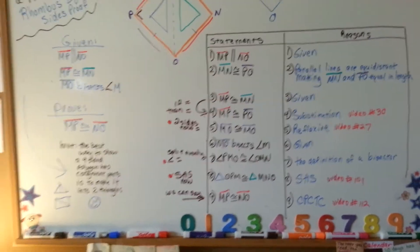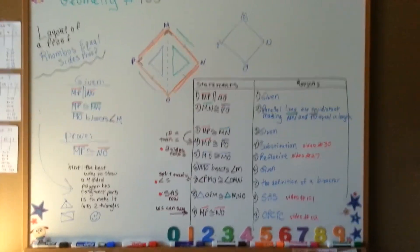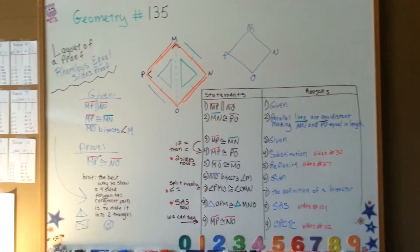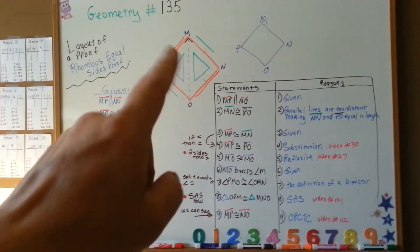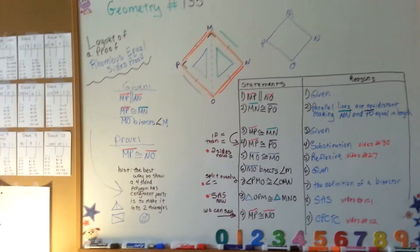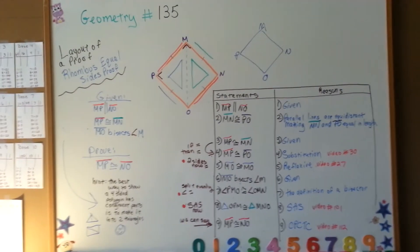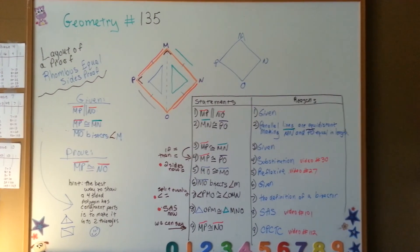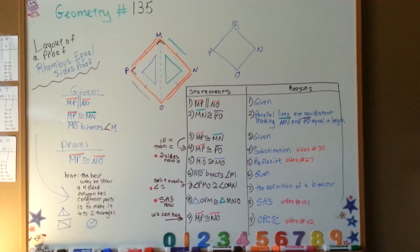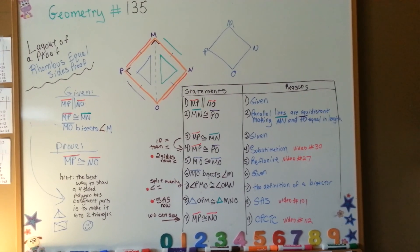That is the rhombus equal sides proof. Remember that we started with a blank rhombus and that it gave us a clue to bisect it and that's what helped us solve it because now we had two congruent triangles. Our next video, number 136, is going to be a rhombus perpendicular diagonals proof. I hope you stay with me. See you then.